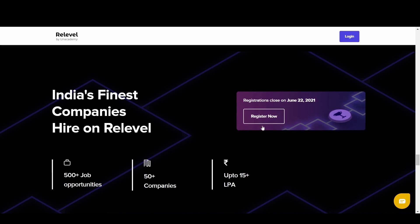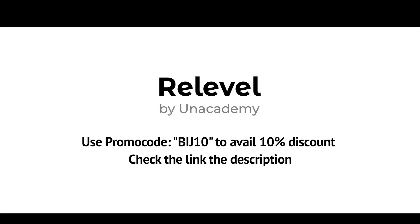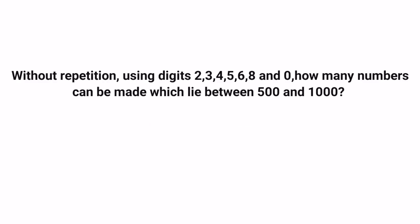Subscribers, don't miss this opportunity. Registrations close on 22nd June 2021. Use promo code BIJ10 to avail 10% discount. Tournament begins on 26 June 2021. All the best and the links are there in the description.